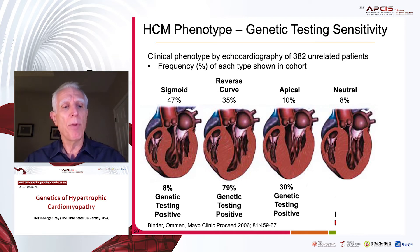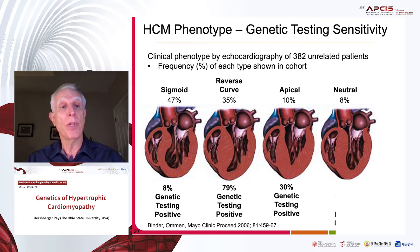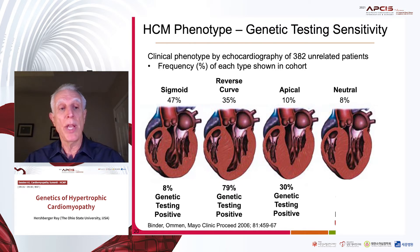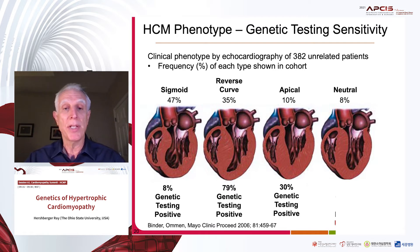This is a report from the Mayo Clinic from 2006 showing clinical phenotype by echocardiography pattern in 382 unrelated patients. The frequency of each type is shown: sigmoid at 47%, the reverse curve or classic pattern at 35%, apical 10%, and neutral 8%. The genetic testing results show only 8% positive for the sigmoid, with by far the most positive genetic testing in the reverse curve or classic phenotype at 30%, and 10% for the neutral.